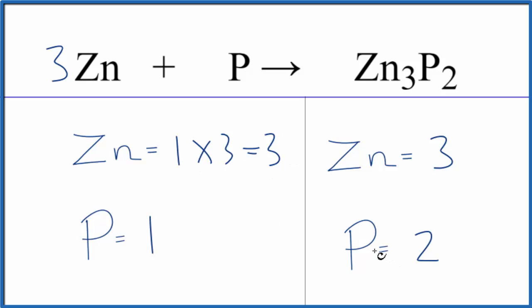Phosphorus, I need two, so I'll put a coefficient of two. One times two, that'll give me two phosphorus atoms, and this equation's balanced.